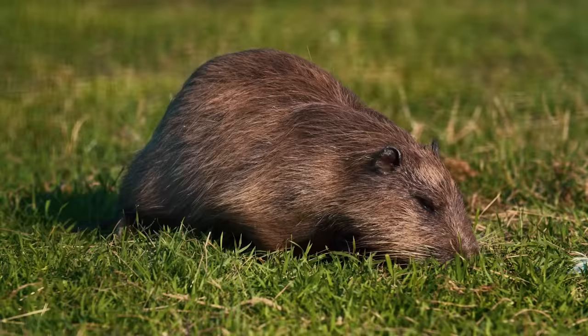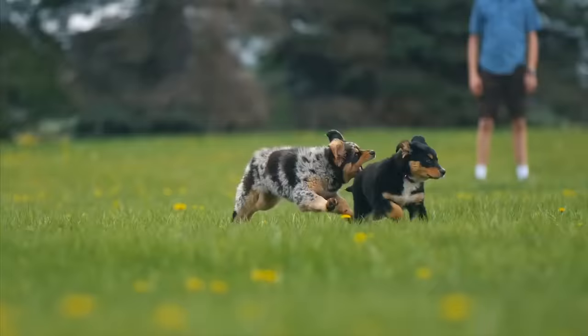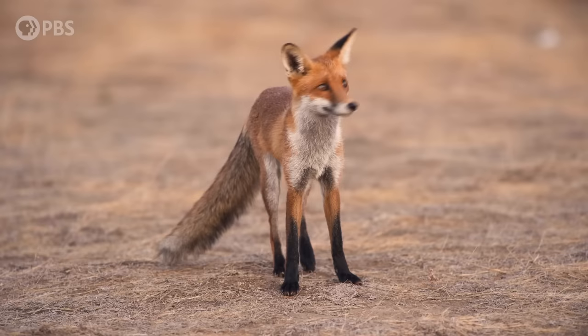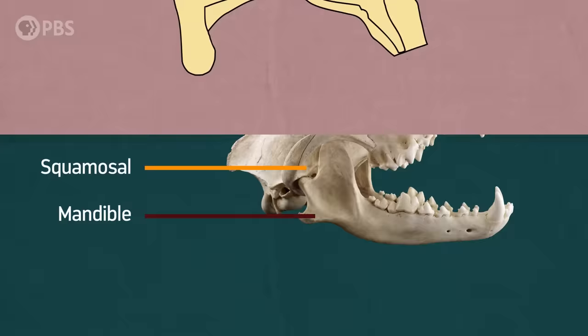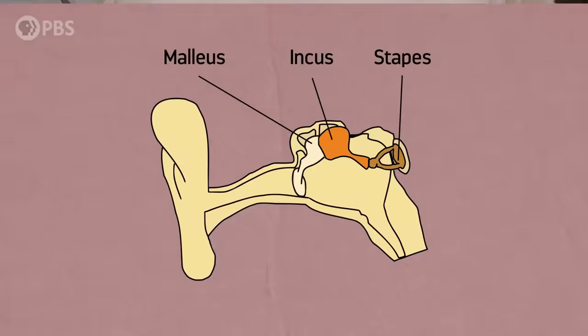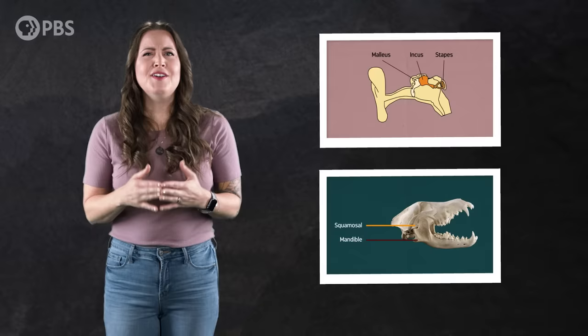Today, it's relatively easy to take a living animal and figure out if it's a true mammal, because all crown mammals have these four things in common: 1. They have fur or hair. 2. They have a jaw joint made up of only two bones — the dentary or mandible and the squamosal, which for us is part of one of the bones of our skull. 3. They have a middle ear made up of three bones — the incus, malleus, and stapes. And 4. They have the ability to produce milk. While two of these traits can be seen easily in fossil mammals, the other two — fur and lactation — are tougher, but that doesn't mean we can't find them.